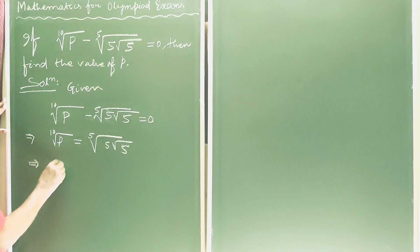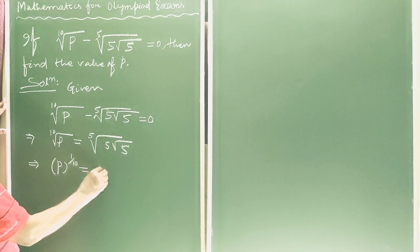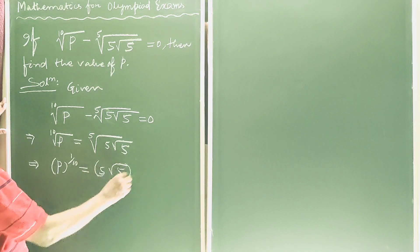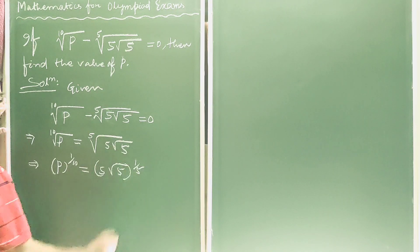This can be written as p to the power 1 by 10 is equal to 5 root 5 to the power 1 by 5.